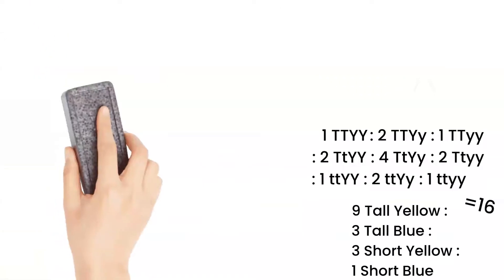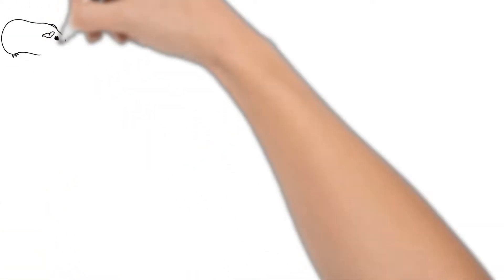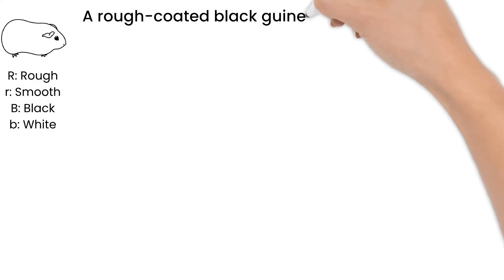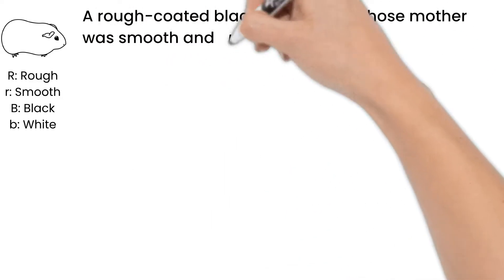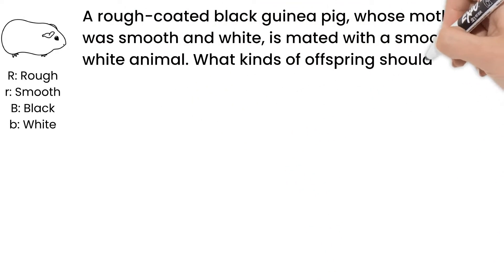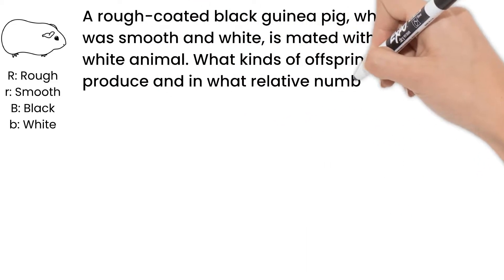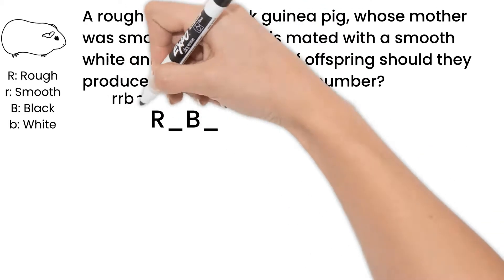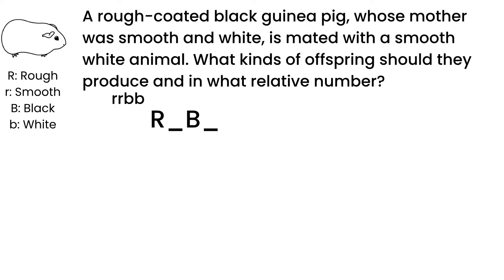Let's try another question. In guinea pigs, rough hair and black are dominant traits. A rough-coated black guinea pig whose mother was smooth and white is mated with a smooth white animal. What kinds of offspring should they produce and in what relative number? We know our first guinea pig has at least one dominant allele of both the rough and black genes. Since its mother only had recessive alleles to give, it must be heterozygous for both genes. Its mate shows recessive traits, so it has to be homozygous recessive for both genes.